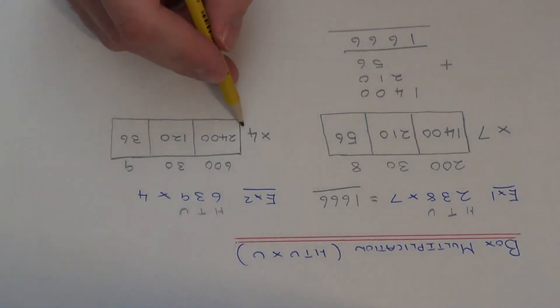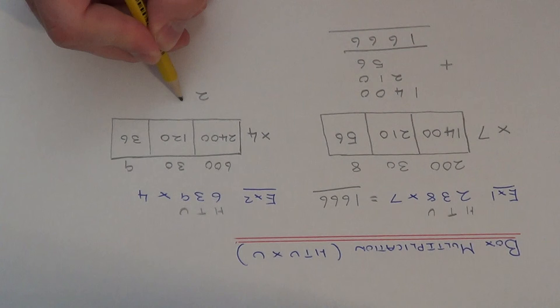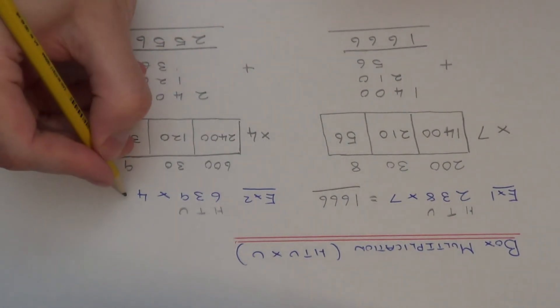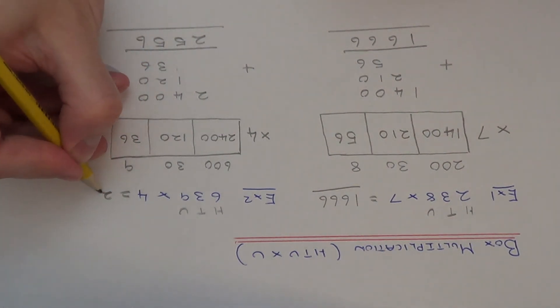So finally we just need to add these three numbers up, so that's 6, 5, 5 and 2. So our final answer is 2,556.